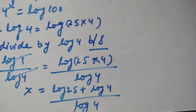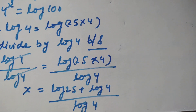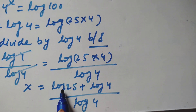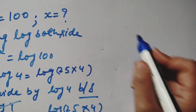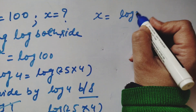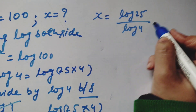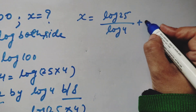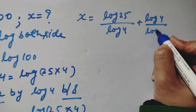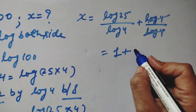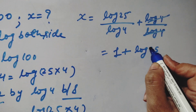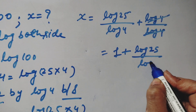So log 4 is here and log 4 is here also, and here is log 25. We write this term as log 4 divided by log 4 plus log 25 divided by log 4, separately. So x equals log 25 upon log 4 plus log 4 upon log 4. Log 4 over log 4 cancels, so it becomes 1. We write x equals 1 plus log 25 upon log 4.